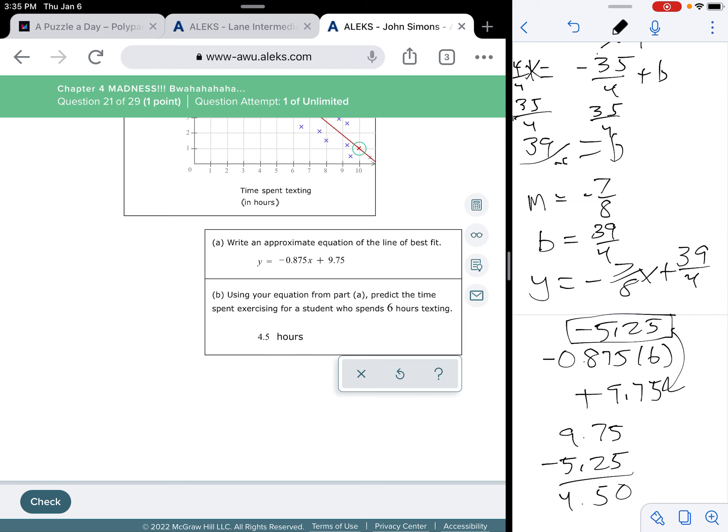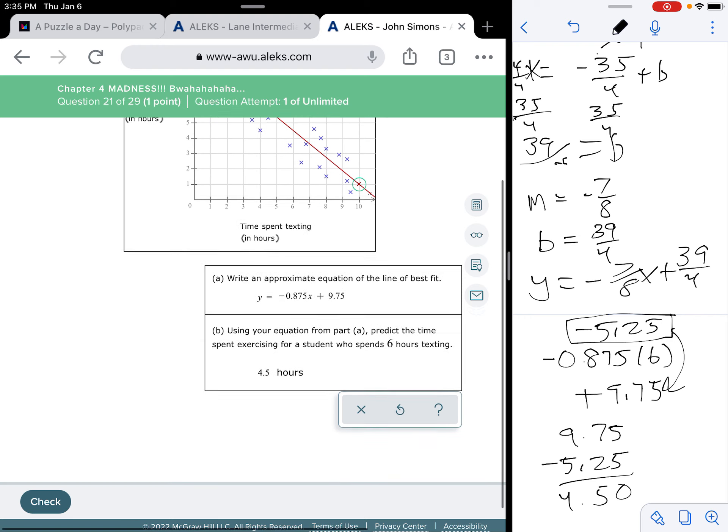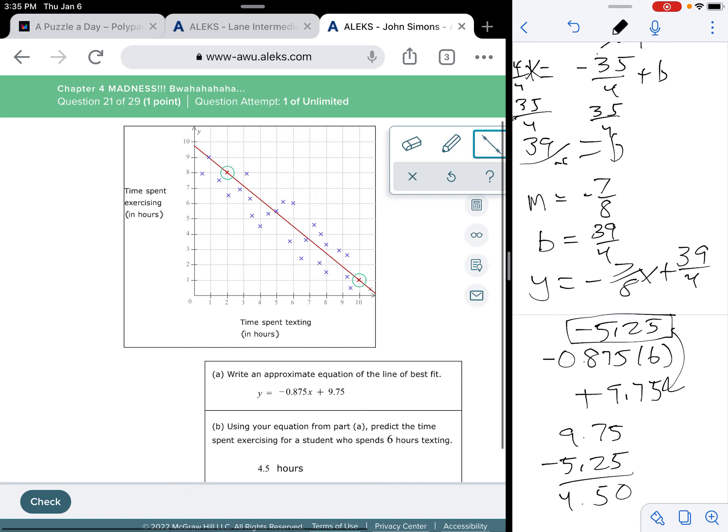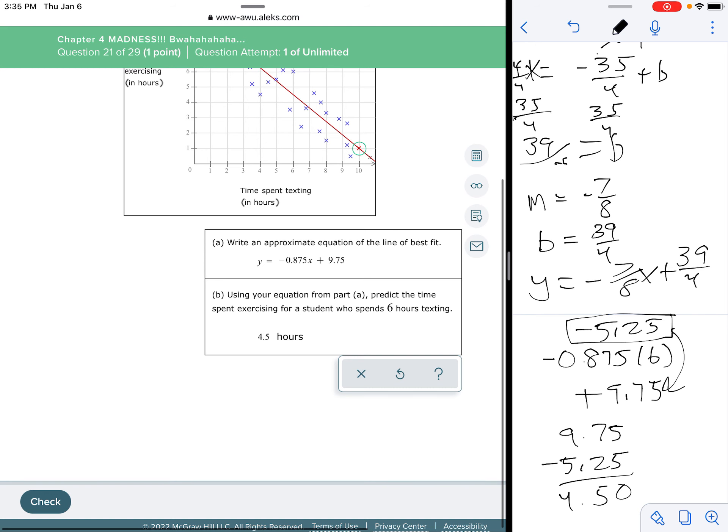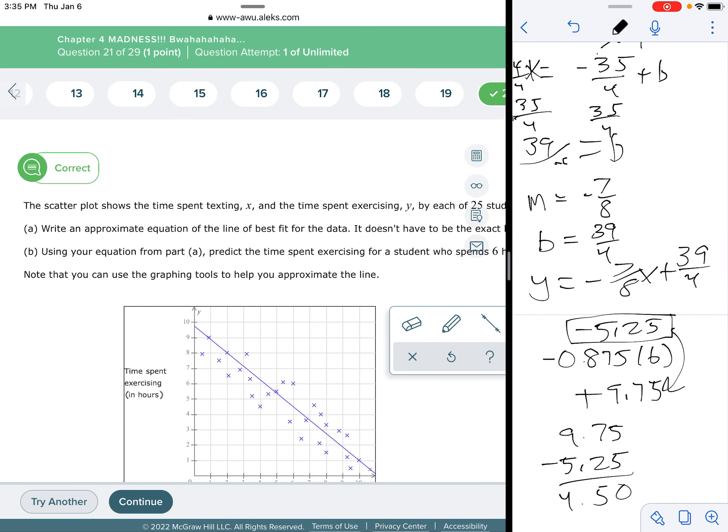And it says, predict the time spent exercising. So, we're predicting that it would be 4 and a half hours. First, let's look. If you go at 6 and you go up to where we made the red line, it's right around 4 and a half hours. So, I think we're in good shape.